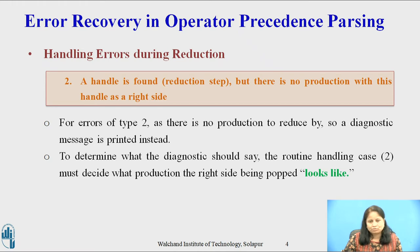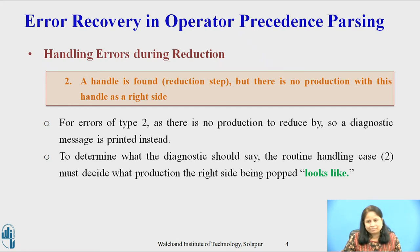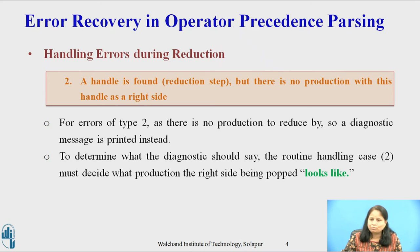For errors of type 2, as there is no production to reduce by, no semantic actions are taken. Instead, a diagnostic message is printed. To determine what the diagnostics should say, the routine handling case 2 must decide what production the right side being popped looks like.